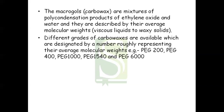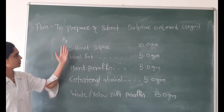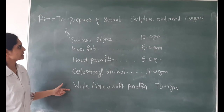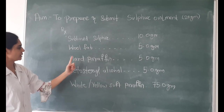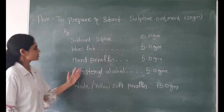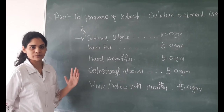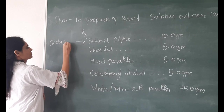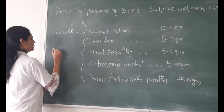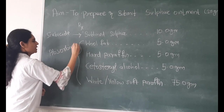Now we will see how this formulation is first formulated, and then we will see the category of the formulation, its use, labeling condition, etc. The formula for sulphur ointment requires sublime sulphur, wool fat, hard paraffin, cetostearyl alcohol, and white or yellow soft paraffin. The sublime sulphur acts as scabicide, and all other constituents are the components to prepare the absorbent base.